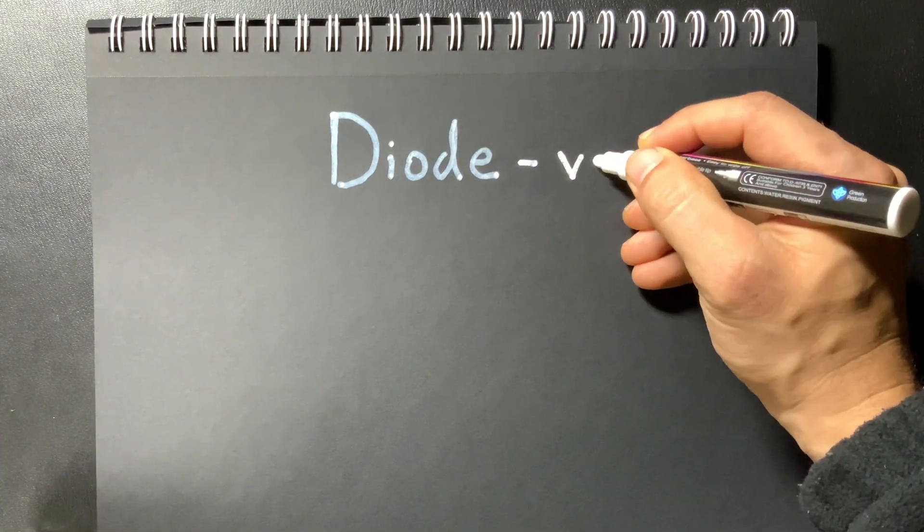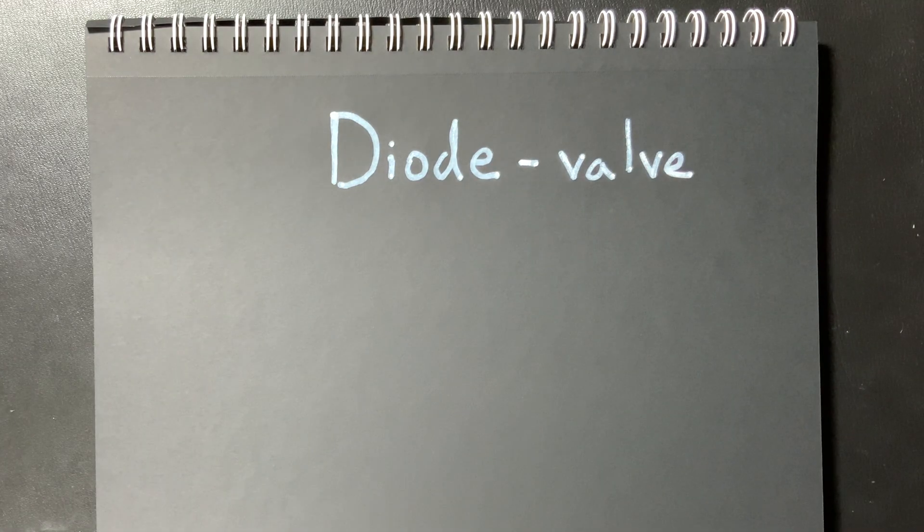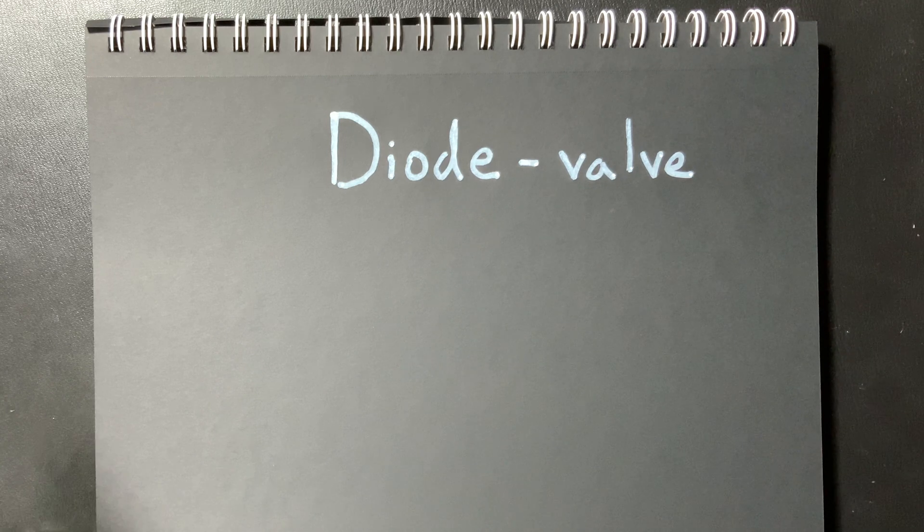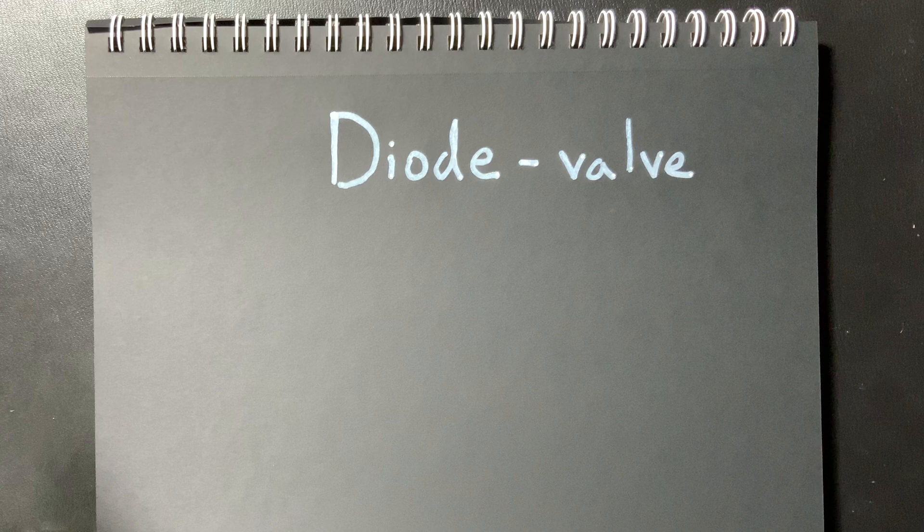Okay so I heard that a diode is sort of like a valve in electronics. So it allows electricity flow in one direction but not the other. So when we go to test diodes we should probably test them in both directions. The direction it's supposed to work in and flow and the direction that electricity is not supposed to flow in.